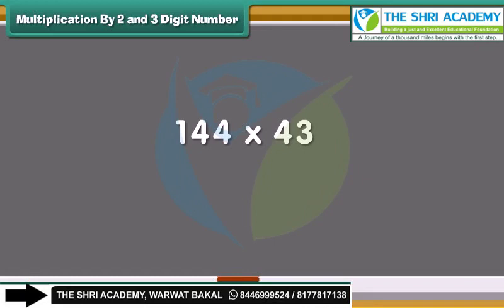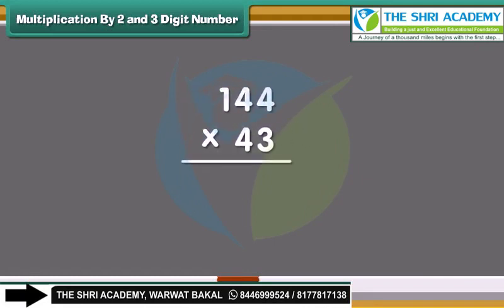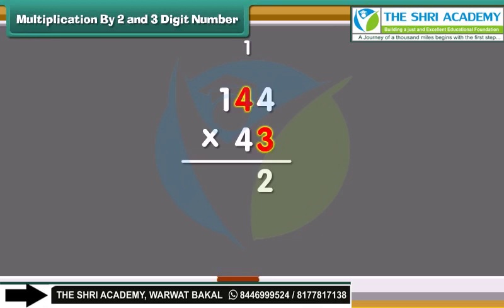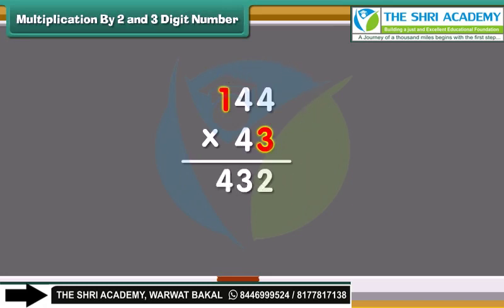Let us multiply 144 by 43. Start multiplication from the 1's place. 3 times 4 is 12 — write 2 in the 1's place and carry 1 forward to the 10's place. Multiply 3 by the digit in the 10's place, which is 4, equals 12; add the carried 1, giving 13. Write 3 in the 10's place and carry 1 forward to the 100's place. Multiply 3 with the digit in the 100's place and add the carried 1. We write 4 in the 100's place.